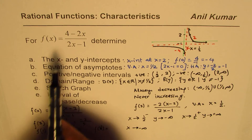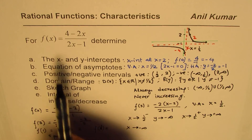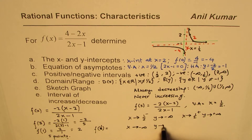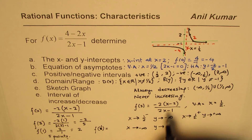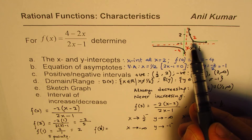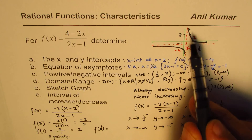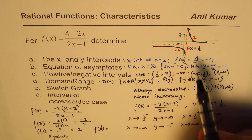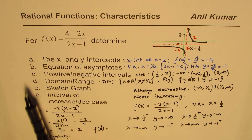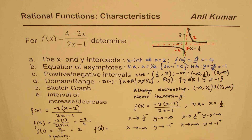When x approaches negative infinity, substituting a very large negative value shows the y-value is slightly less than minus 1, approaching minus 1 from below. When x approaches positive infinity, y approaches minus 1 from the positive side. Since we knew the x and y intercepts and the graph cannot cross the vertical asymptote, this behavior near the asymptotes confirms our sketch. If this analysis is a required item, elaborate further on this behavior.